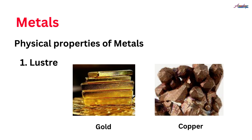The first physical property of metal is luster. Luster means shine — a soft glow — that is called luster. For example, aap ne agar gold dekha, copper dekha, to un mein shine hai. So all metals possess luster; there is a soft glow in them.